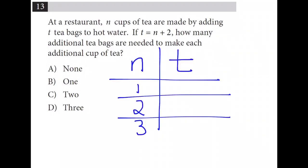We can solve this problem by making a table. And as we plug in different values for n, we can see how many tea bags are needed, which is the variable t. So first off, if we plug in 1 here for n, to get t, we'll take 1 plus 2, which is 3.